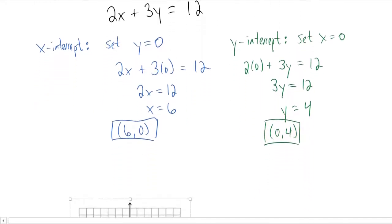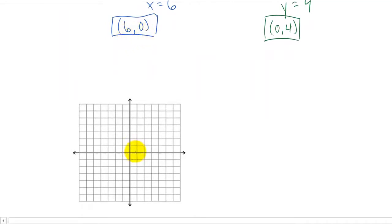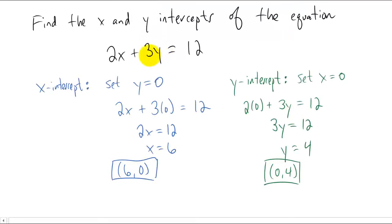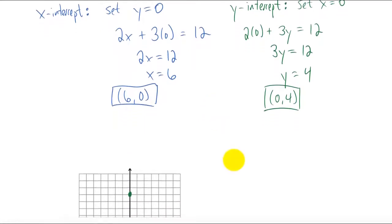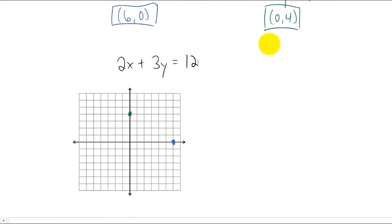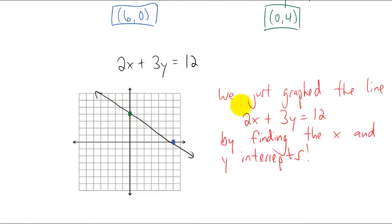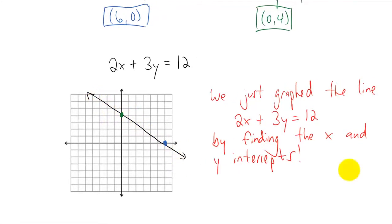Let's graph this x and y intercept. Our x-intercept is (6, 0) — that's right here. And our y-intercept is (0, 4) — right here. We already know that this is the form of a linear equation, so if we have these two intercepts drawn correctly, the graph of 2x plus 3y equals 12 is just those two points connected by a straight line. We graphed the line simply by finding and plotting the x and y intercepts, then connecting them with a line.